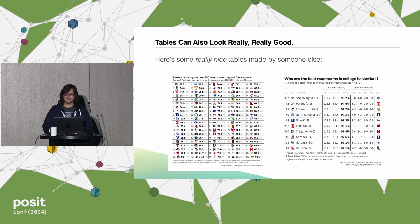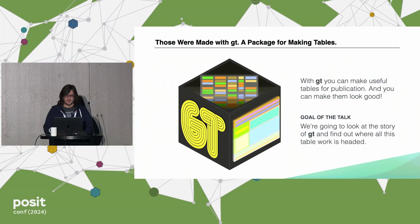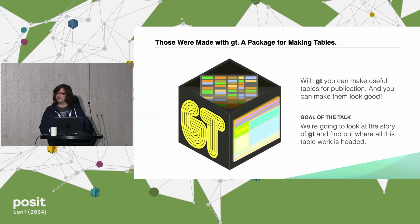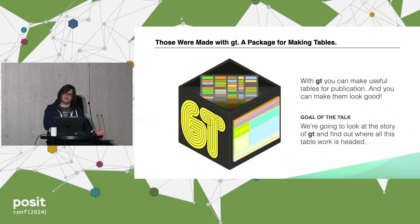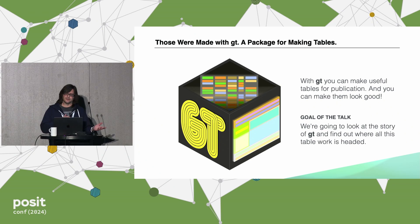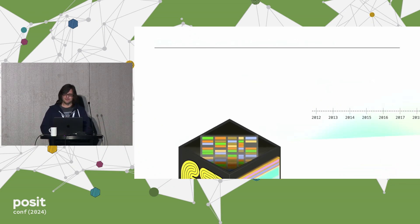They're really, really nice — super nicely styled, with titles, footnotes, very informational and beautiful. The great thing is all these tables were made with GT. It's a package for making tables. You can make useful tables for publication, tables for sharing, and importantly, you can make them look good. The goal of this talk is to look at the story of GT — where we came from, where we're going. Let's dive in.